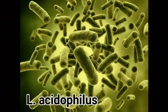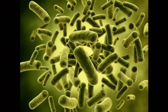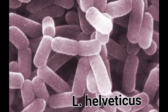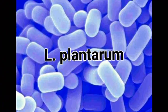Dairy Products. Various dairy products such as curd, cheese, butter, etc. are obtained by the activity of lactic acid bacteria. These bacteria convert the lactose sugar present in milk into lactic acid. As a result, milk becomes sour and milk protein casein gets separated. Some microbes which ferment milk are Lactobacillus acidophilus, Lactobacillus helveticus, Lactobacillus plantarum, Streptococcus lactis, etc.